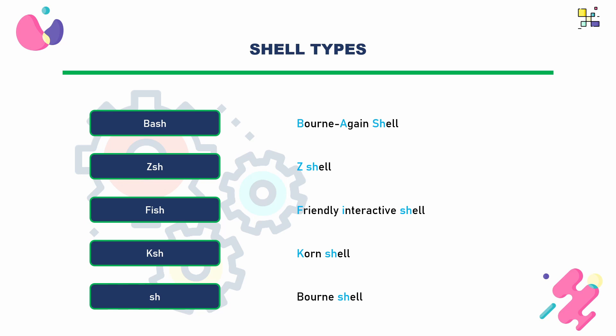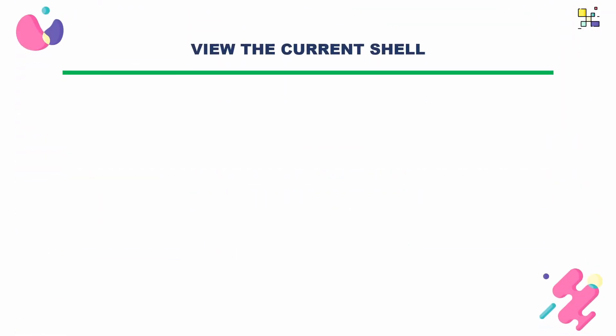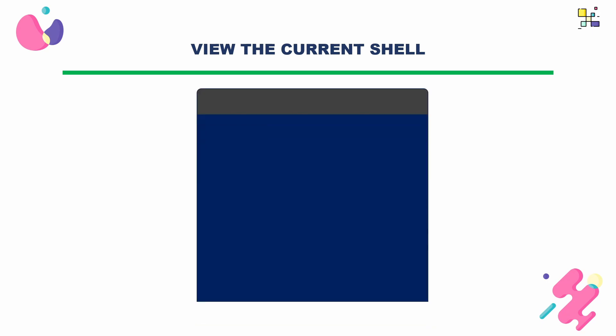Let's now see how we can view the shell that you are currently using. You can view the current shell using the echo command with the SHELL environment variable. After running this command, you will see the path to the shell executable. For example, if you are using the bash shell, you will see something like that. The output will vary depending on which shell you are currently using.